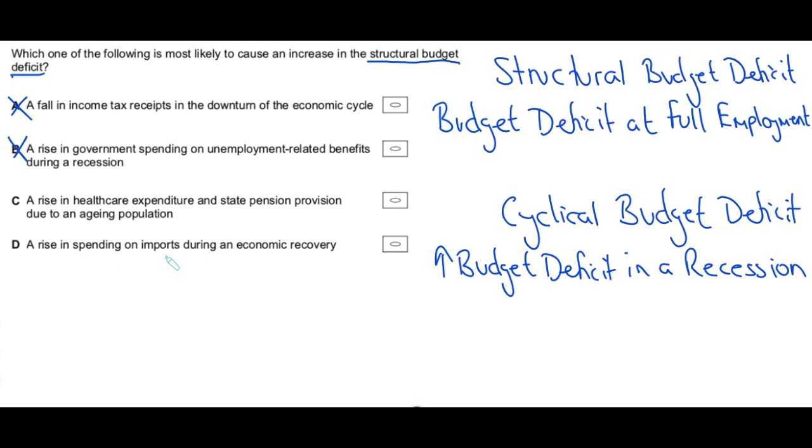Well, a rise in spending on imports has got nothing to do with a budget deficit. That is there to make sure that people aren't getting confused between a budget deficit and a current account deficit. A rise in spending on imports will certainly lead to a current account deficit and increase there, but that's got nothing to do with the budget deficit. So that is a trap, just to make sure students aren't getting confused between budget deficits and current account deficits.